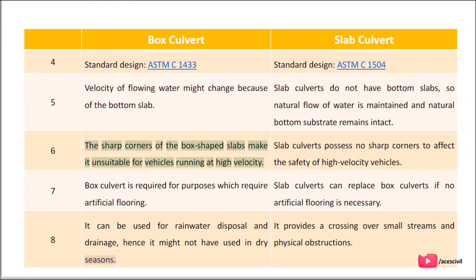Difference 6 — Vehicle Safety: The sharp corners of box-shaped culverts make them unsuitable for vehicles running at high velocity. Slab culverts possess no sharp corners to affect the safety of high-velocity vehicles.